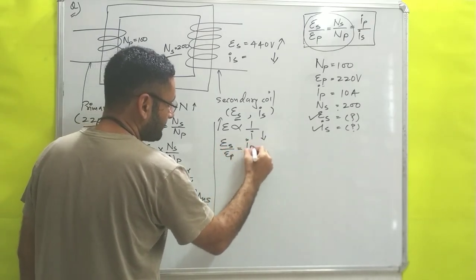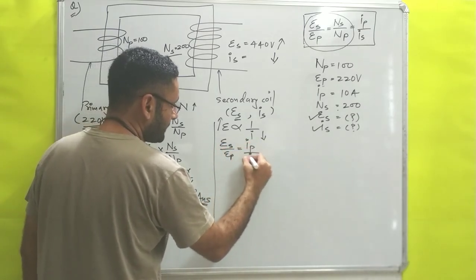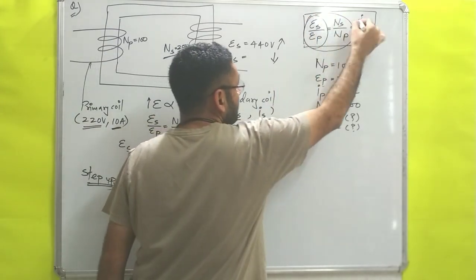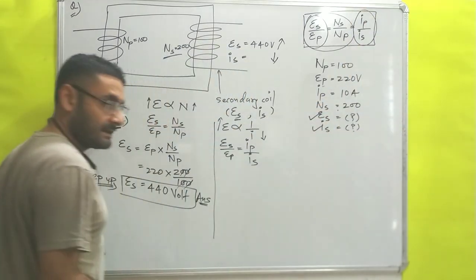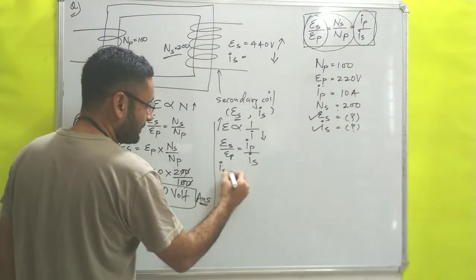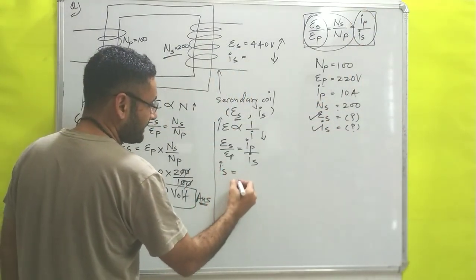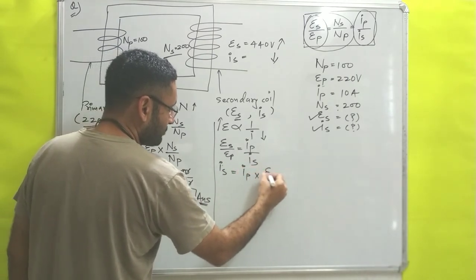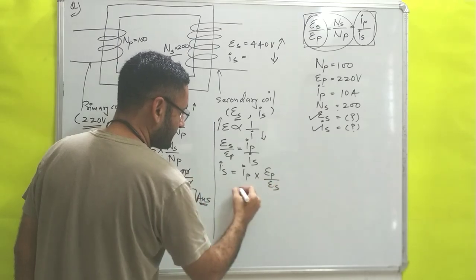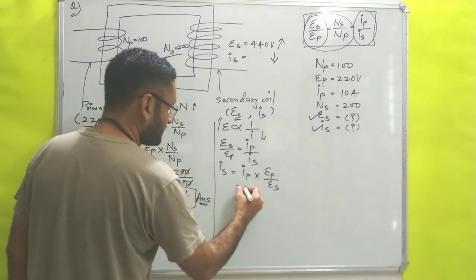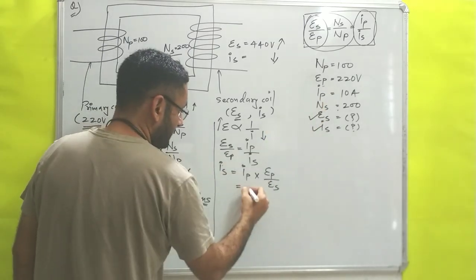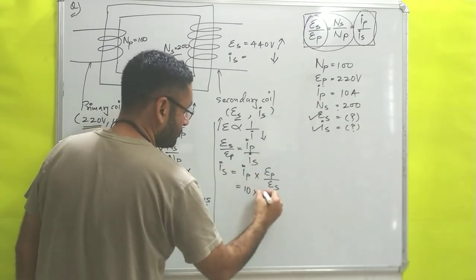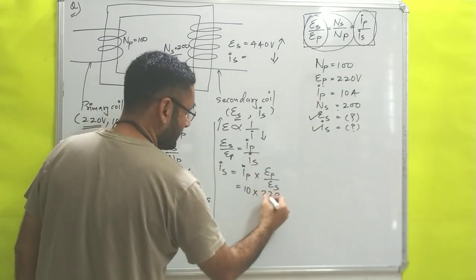We know that ES / EP = IP / IS. We want IS, so making IS the subject: IS = IP × (EP / ES). IP = 10 amperes, EP = 220 volts, ES = 440 volts.